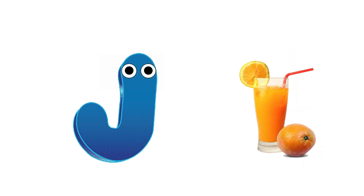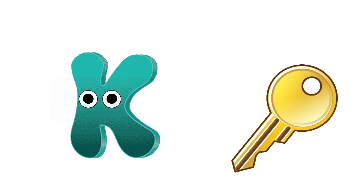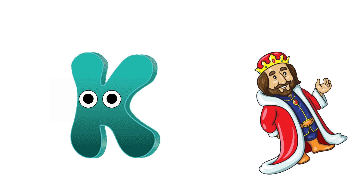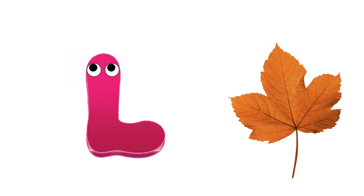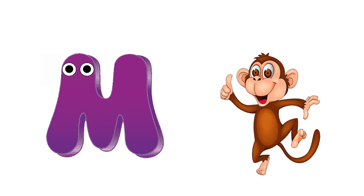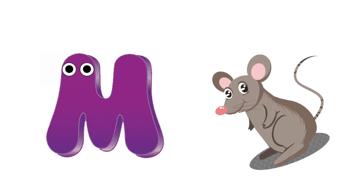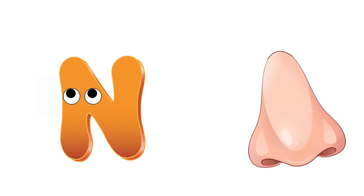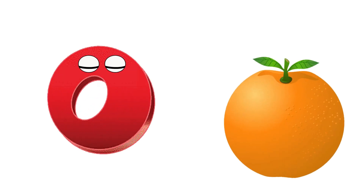J is for juice, j, j, juice. K is for key, k, k, key. K is for king, k, k, king. L is for leaf, l, l, leaf. L is for lunch, l, l, lunch. M is for monkey, m, m, monkey. M is for mouse, m, m, mouse. N is for nose, n, n, nose. N is for nest, n, n, nest. O is for orange, o, o, orange.